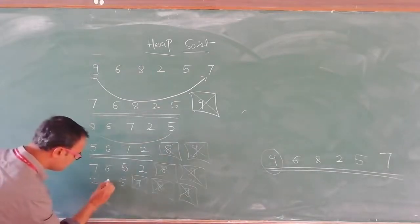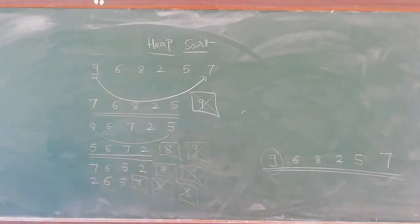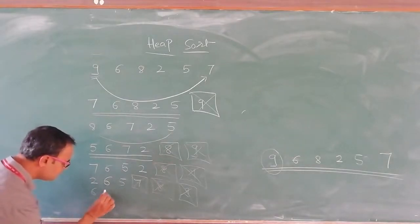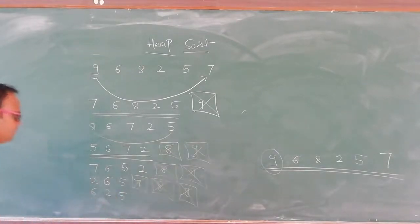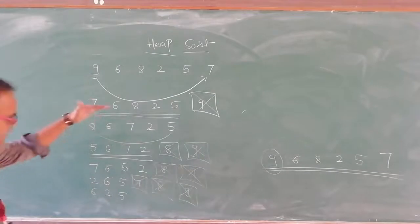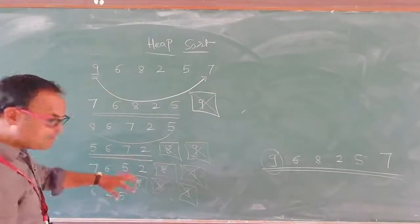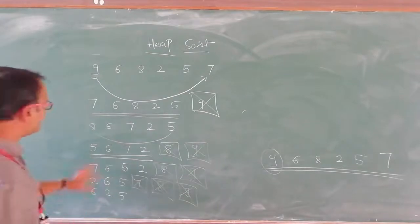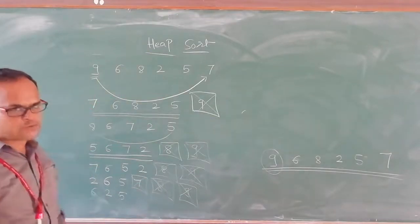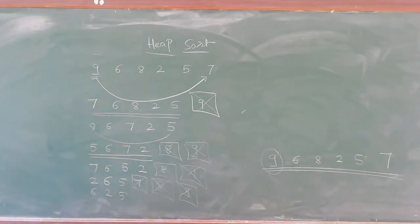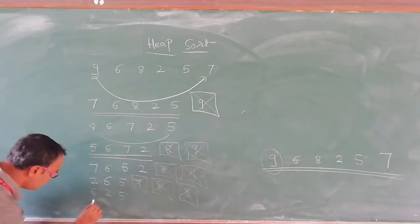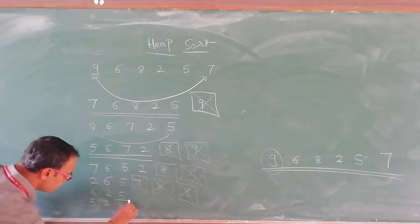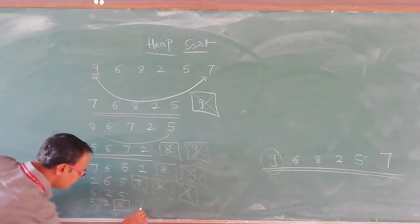Remaining nodes are 2, 6, and 5. Construct the heap once again: 6 comes first, 2 is here, 5 is here. At each and every iteration one number gets placed in its final position — just like bubble sort. The biggest number goes to the last position. So 6 is sent to the last position: 5 comes here, 2 is here, and 6 is placed.